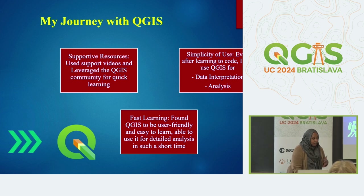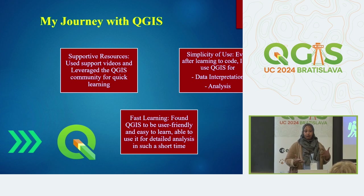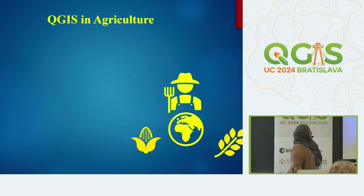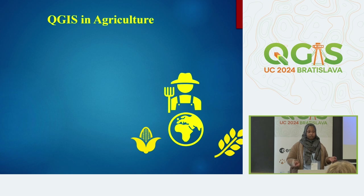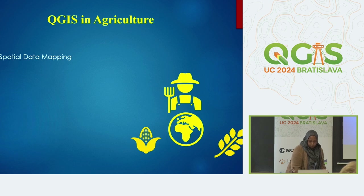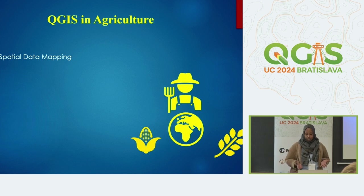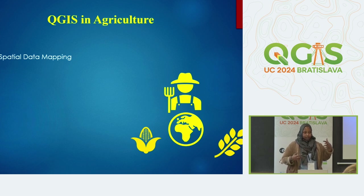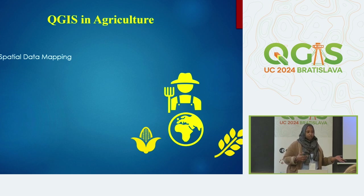What helped me was the supportive community and the simplicity of the tools in QGIS. Now I'll start by discussing the many uses of QGIS in agriculture in general, and then go to crop map validation. QGIS helps in spatial data mapping in agricultural uses — it can manage your spatial data like crop mapping.